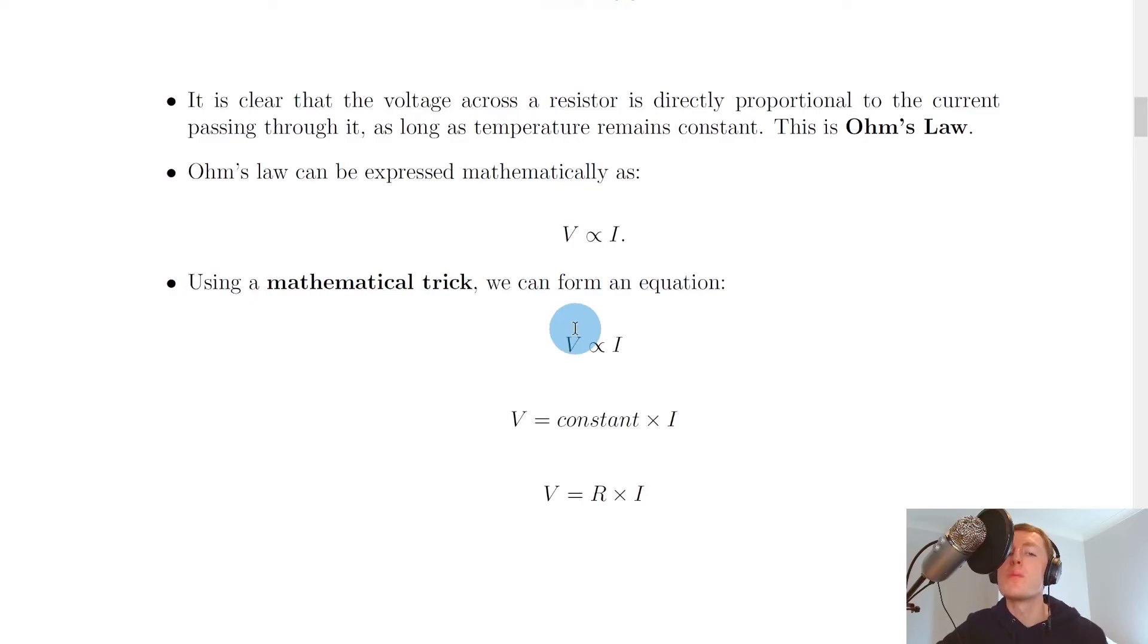We can also express Ohm's Law mathematically. V is directly proportional to I. This tells us Ohm's Law in a very simplified symbol form. So voltage is directly proportional to the current for a resistor.